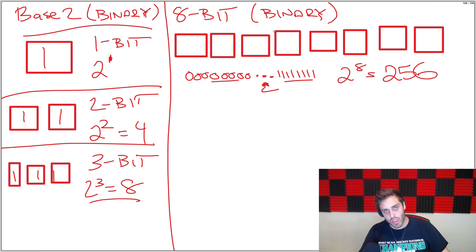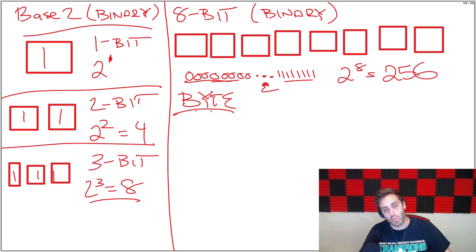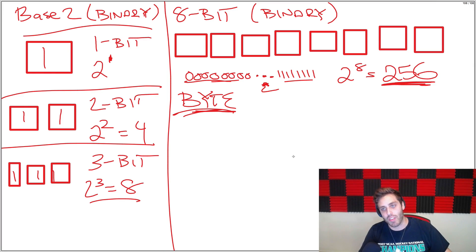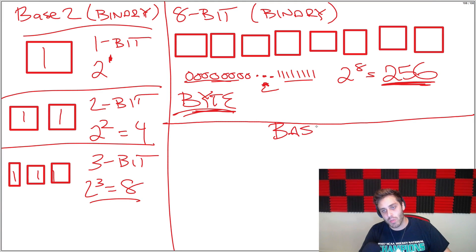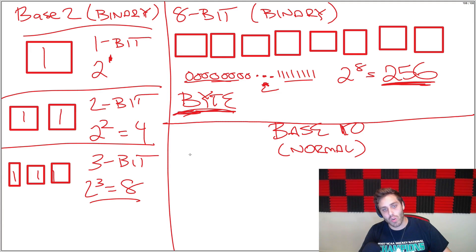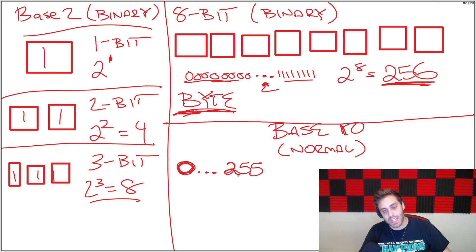We call an 8-bit binary number a byte. One byte can encode 256 different combinations of numbers. In base 10, the range of numbers that 1 byte can encode is 0 up to 255, because this is 256 different combinations including the 0.